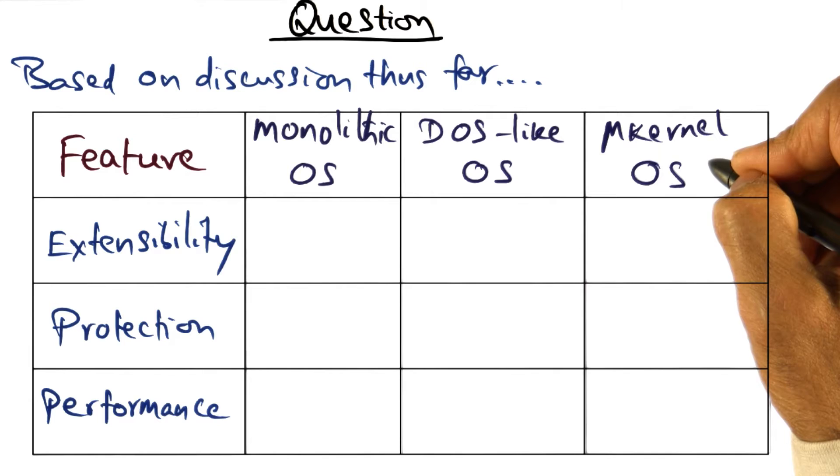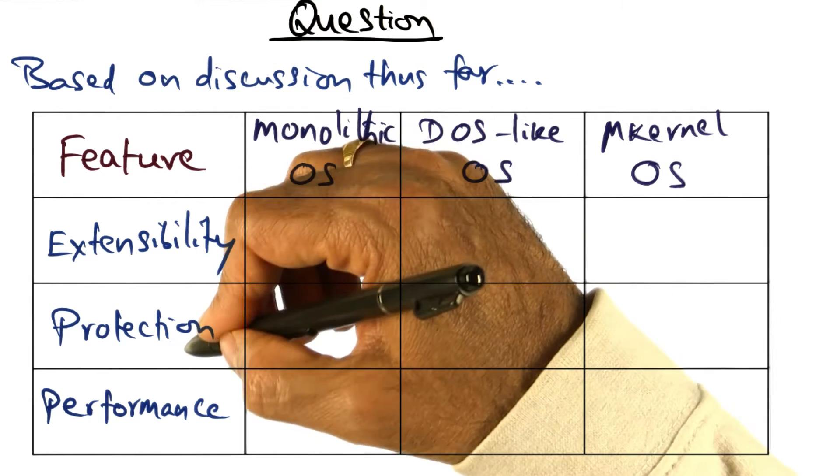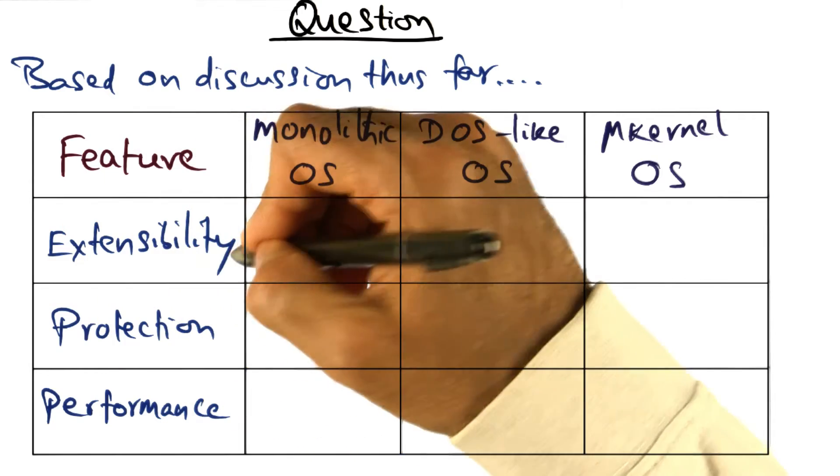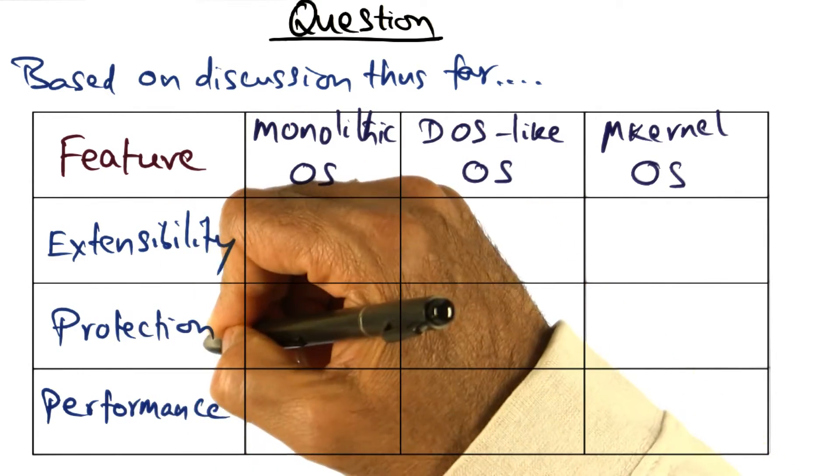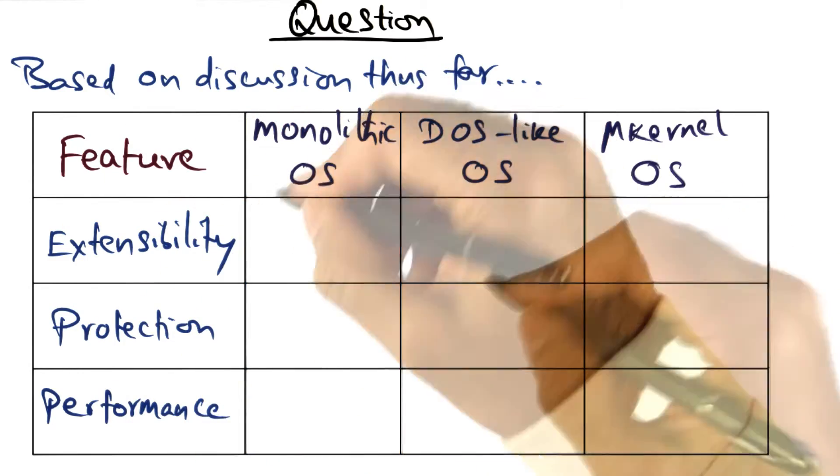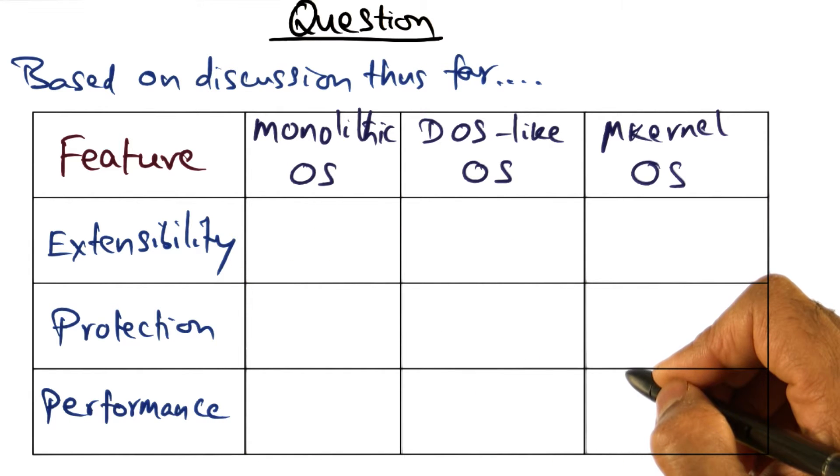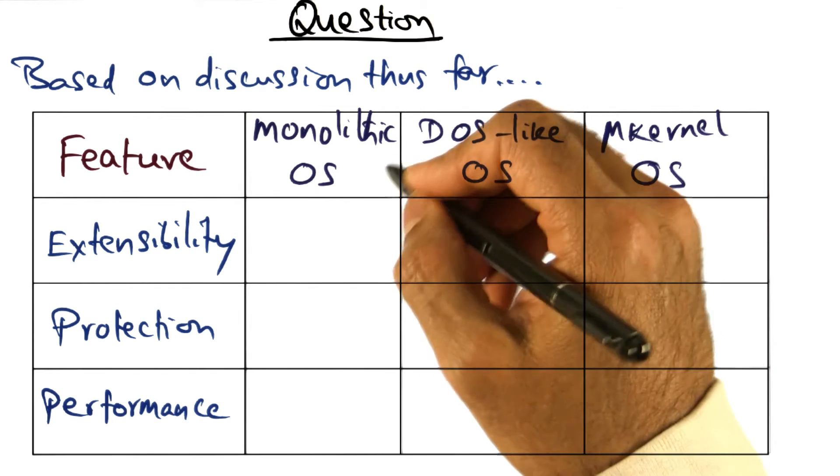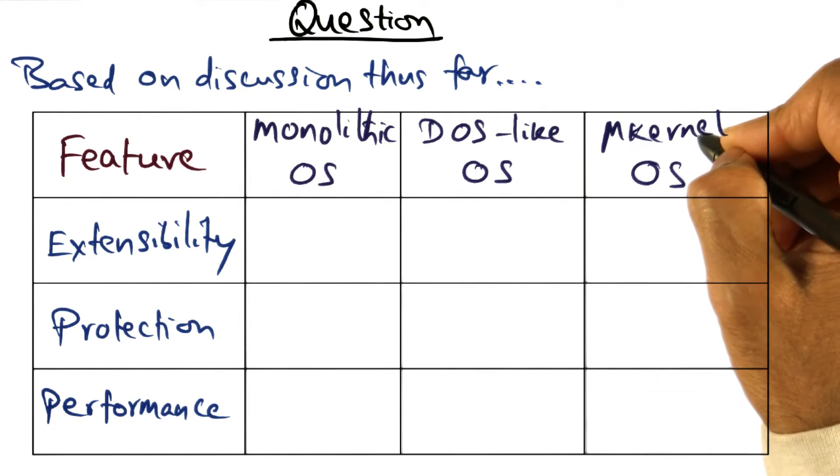And what I would like you to do is think about the features that are important in the structure of the operating system: extensibility, protection, performance, and try to fill out the scorecard as to which of these features are adequately met by each one of these structures.